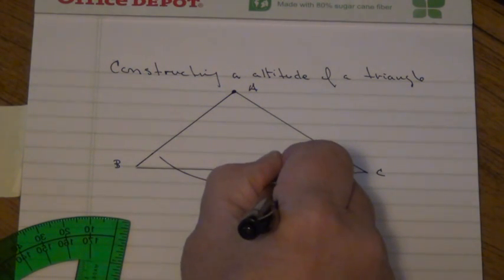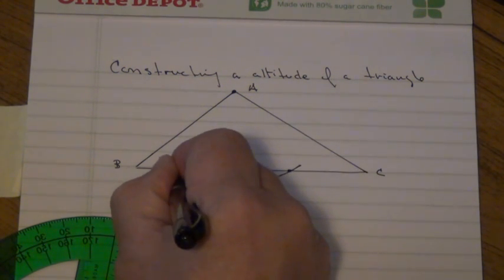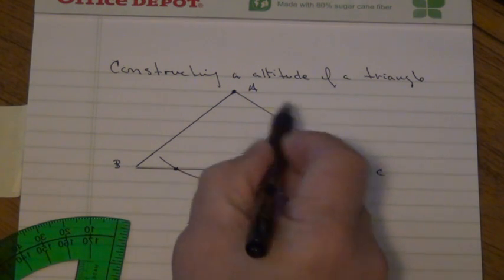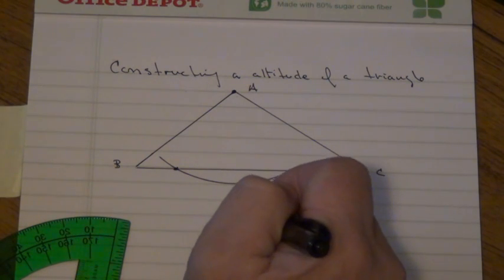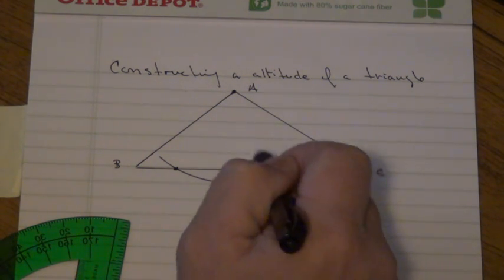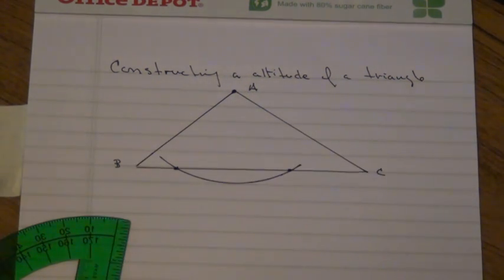So that point there is equal distance from A. Now all I need is one more point that's equal distance, and then that's how you draw the perpendicular.